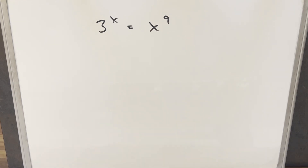We have here today an interesting exponential problem: 3 to the x equals x to the 9th. I thought this would be a good opportunity to use the Lambert W function — I haven't done a Lambert W problem in about a year.